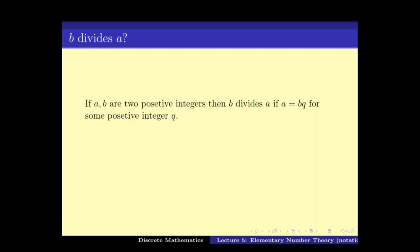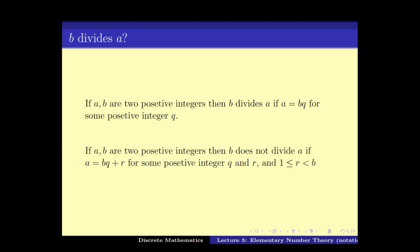If a and b are two positive integers, then b divides a if a equals b times q for some integer q. If b does not divide a, then when a is divided by b there will surely be a remainder r which is greater than or equal to 1 and strictly less than b. So if we get a remainder which is non-zero and between 1 and b, it means that b does not divide a.